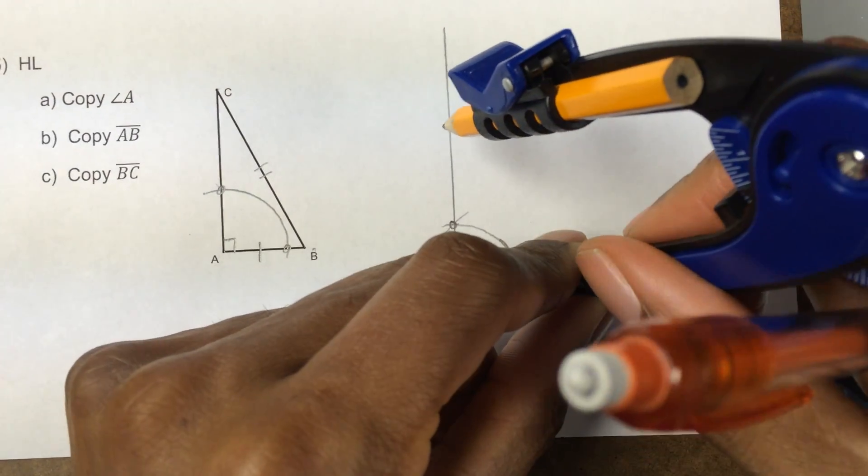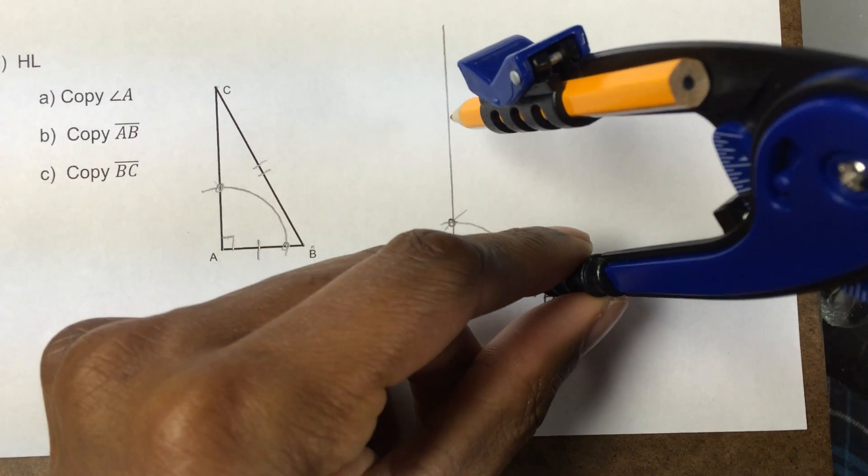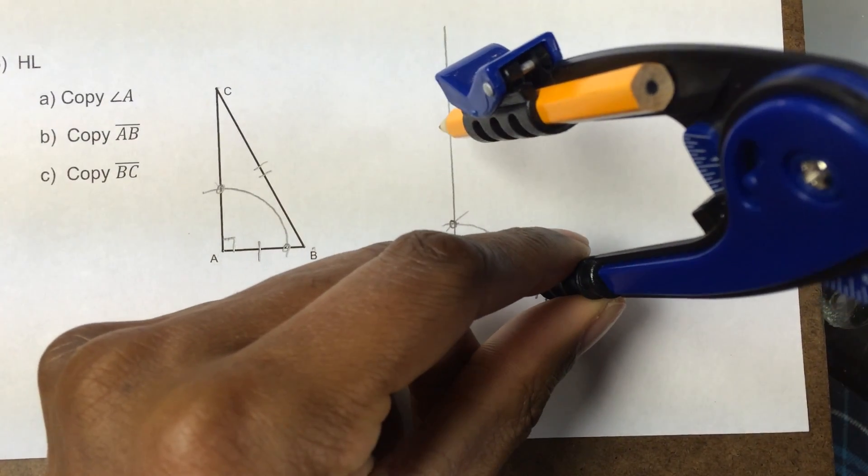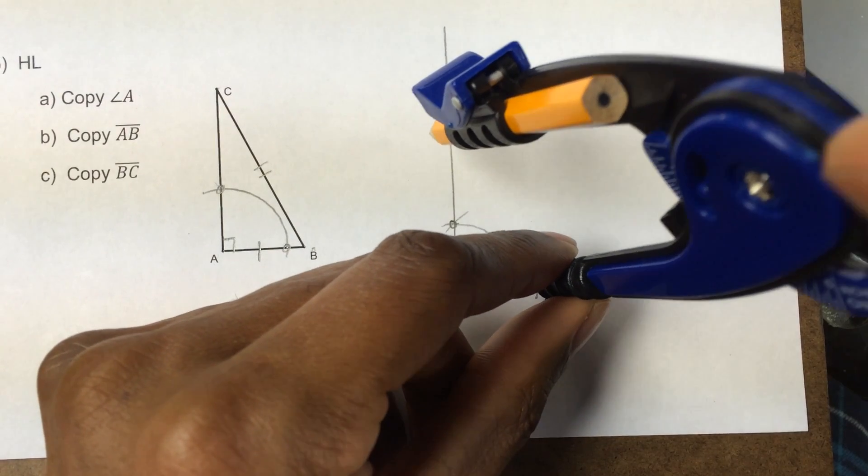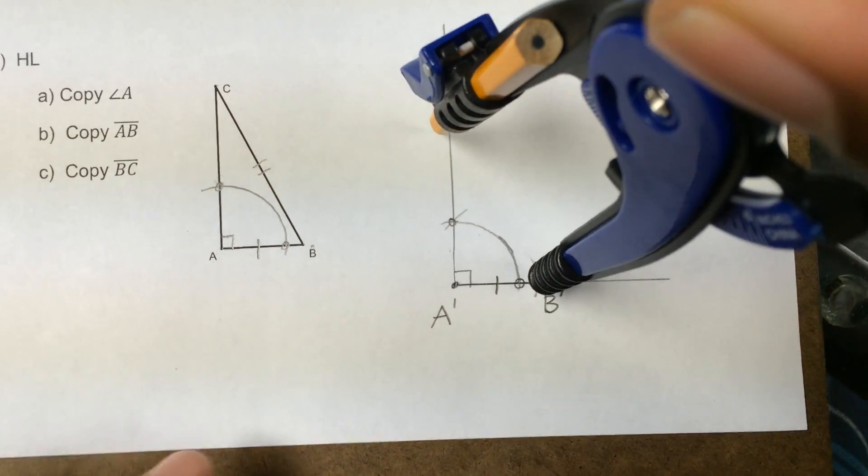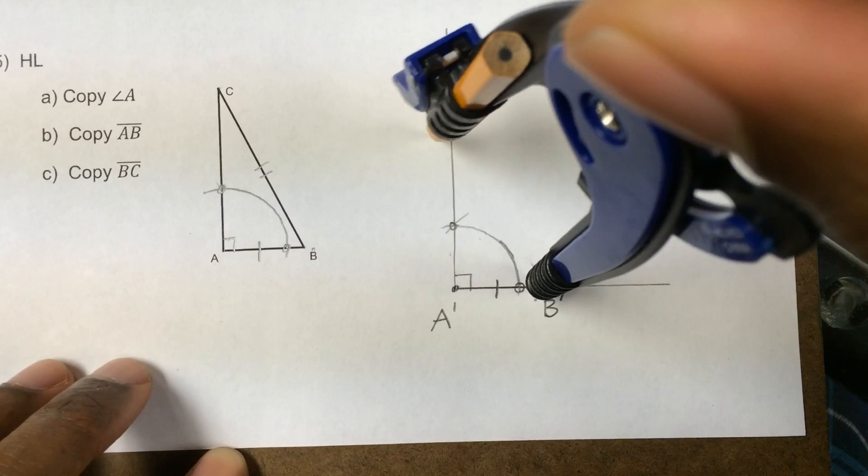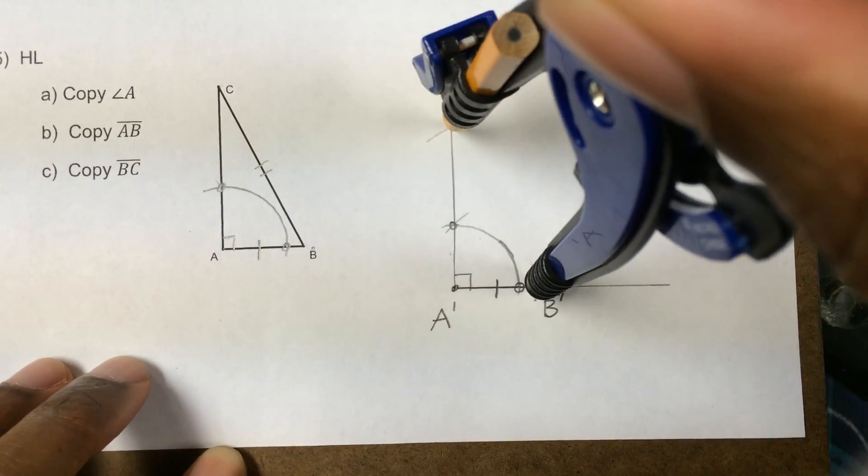OK, the hardest part is not letting my compass slip around. It's wanting to slip a lot today. So I can tell it's going to land right here.